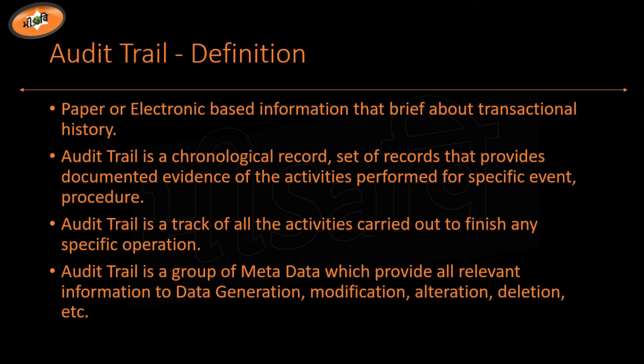Data related to your data is called metadata. Audit trail is a group of metadata which provides all relevant information related to data generation, modification, alteration, deletion, etc. When I have metadata, I get information about how much data I have generated, whether there is any modification, alteration, or deletion — all that information is found in the metadata.